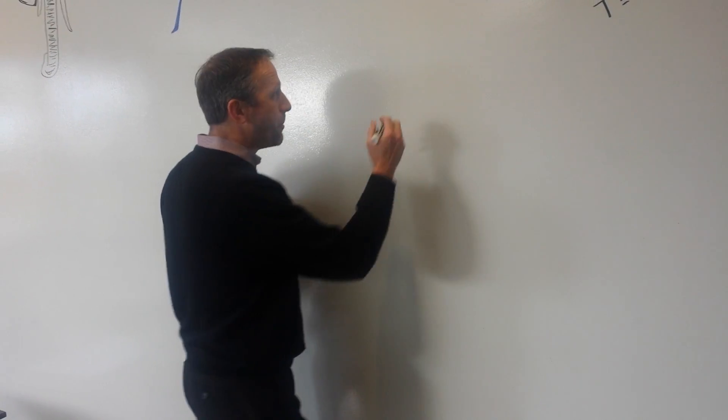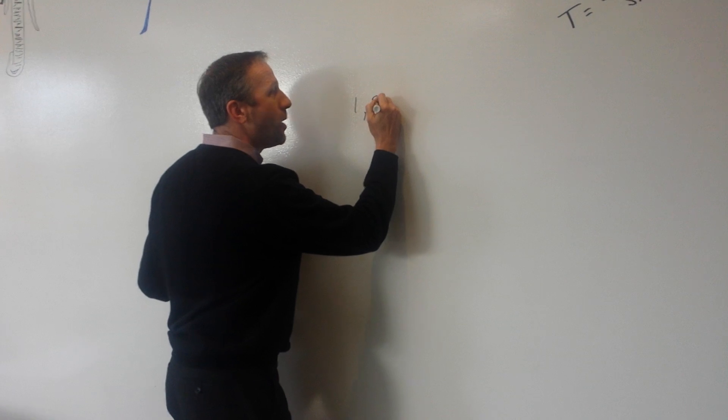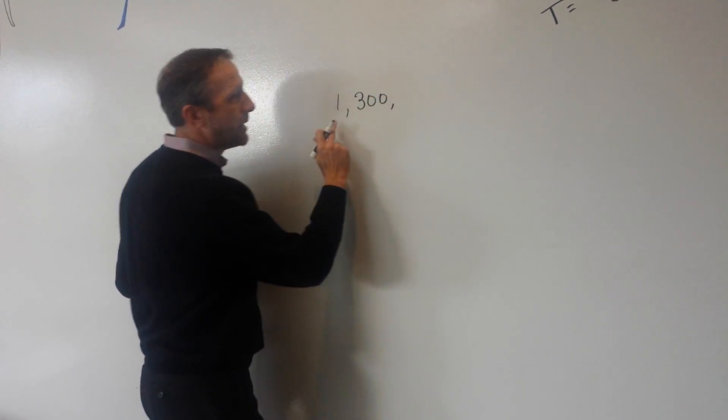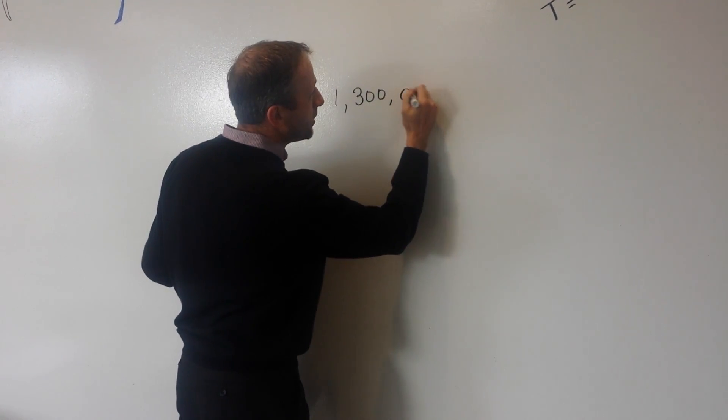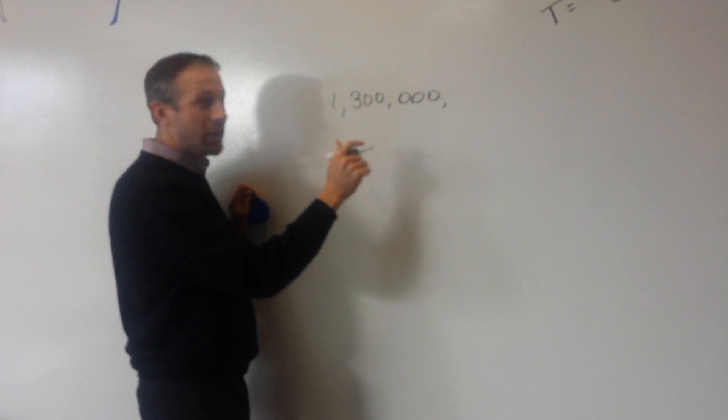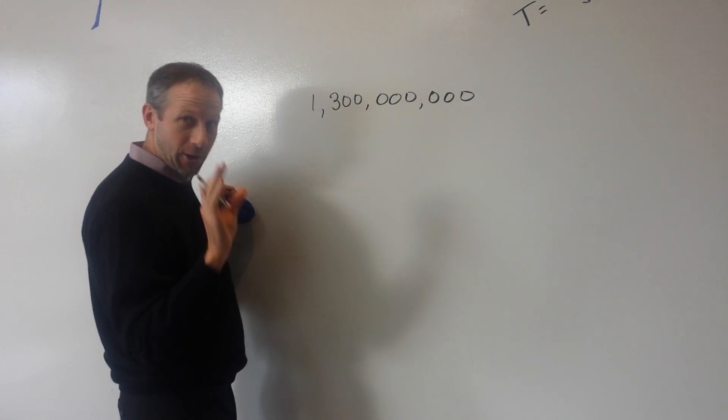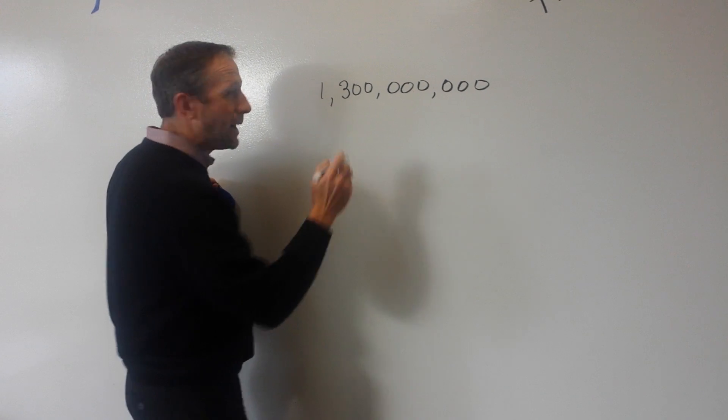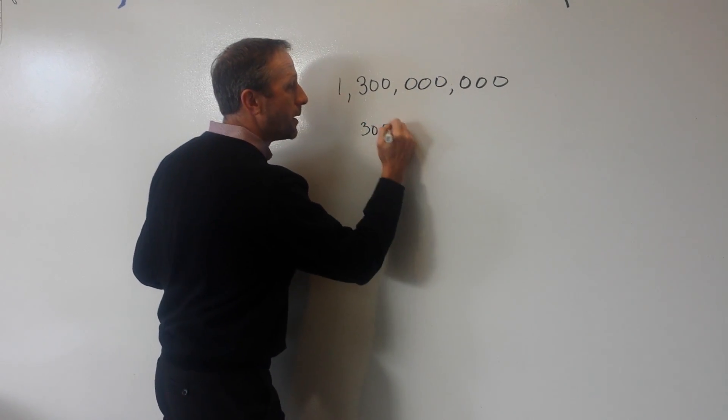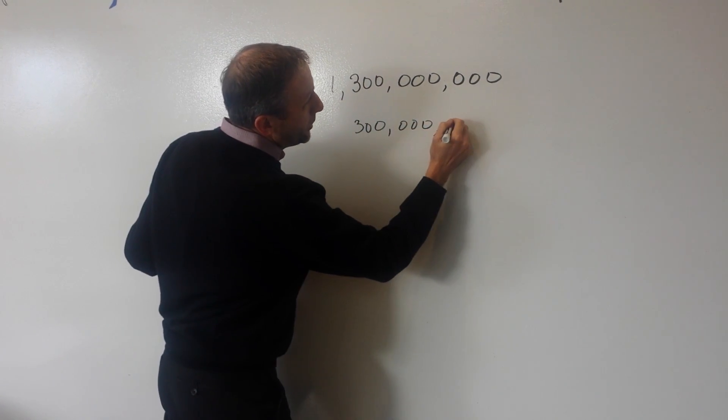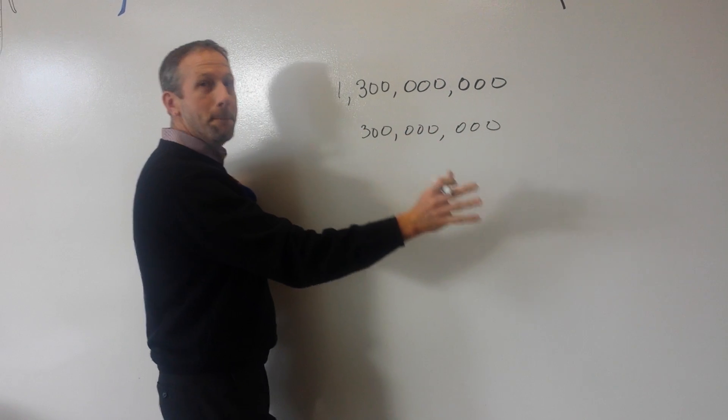So if you think about this, we're going to do some math. We are going to write out $1.3 billion: $1,300,000,000. $1.3 billion. Good? With me? Awesome. Now we're going to write out $300 million: $300,000,000.